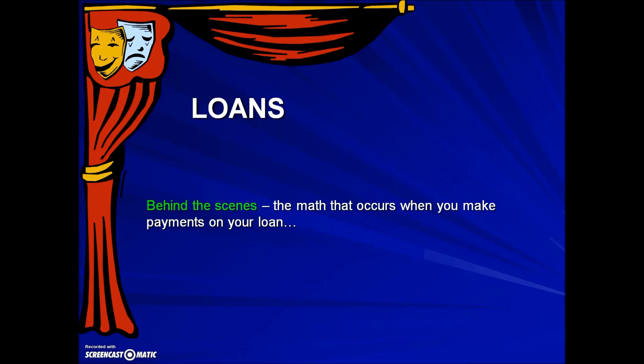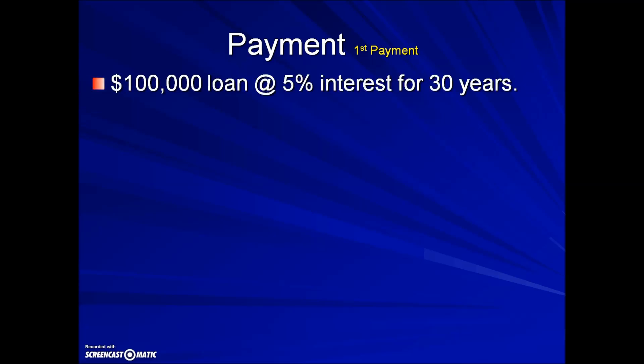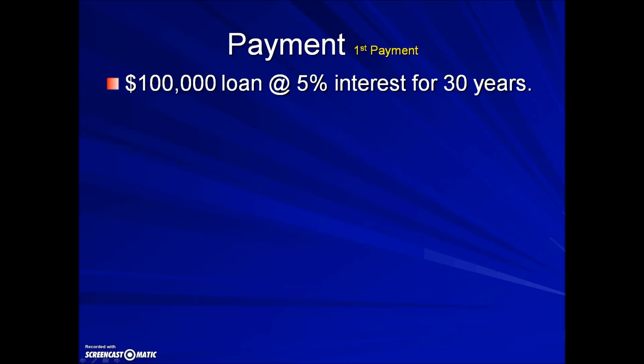Finance unit, section 3: behind the scenes of a loan. We're going to take a look at the math that occurs when you make payments on your loan. As an introduction, we're going to look at what happens with the payments through the course of a loan. For this illustration, we're going to look at a $100,000 loan at 5% interest for 30 years.